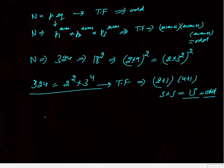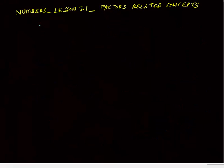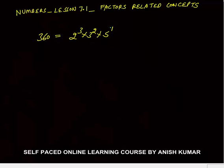Very important concept: if a number is a perfect square, total factors are always odd. Vice versa — if total factors are odd, the number will always be a perfect square. Now for 360 = 2³ × 3² × 5¹, we will discuss total factors, odd factors, even factors, and more.